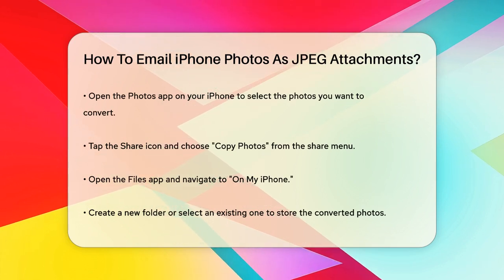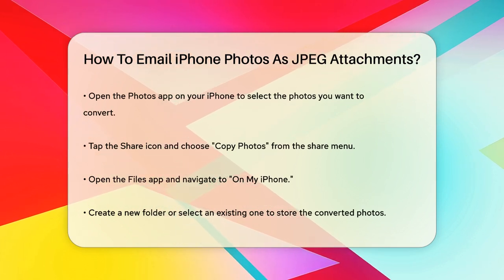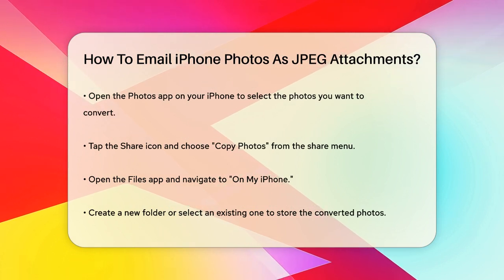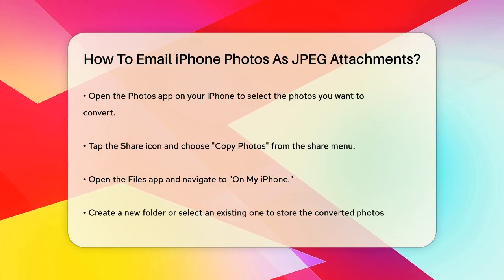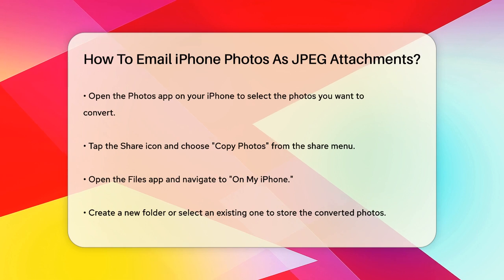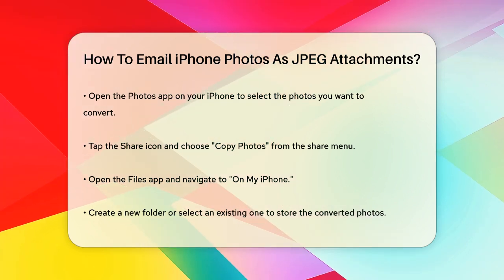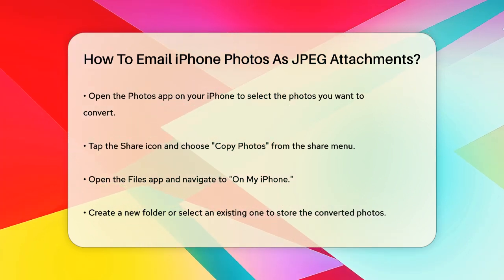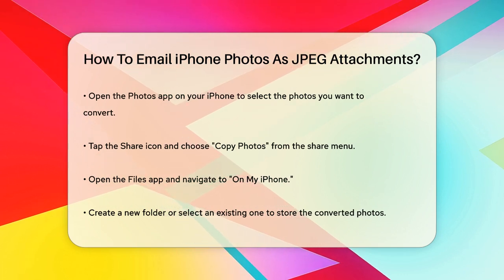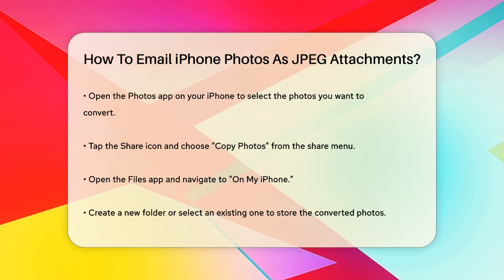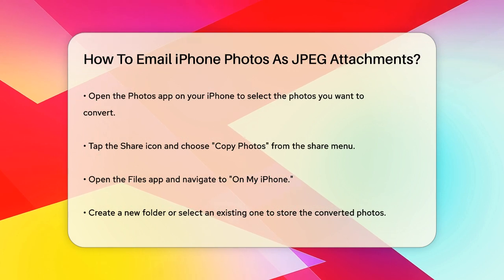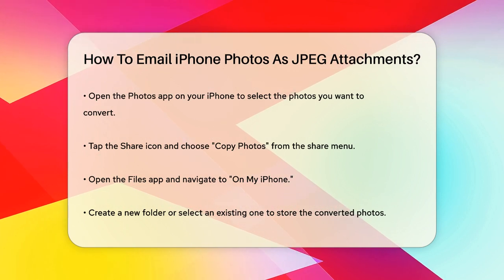Here's a simple way to do it directly on your iPhone. Open the Photos app, select the pictures you want to convert, and tap the Share icon. Choose Copy Photos from the Share menu. Next, open the Files app, go to On My iPhone, and create a new folder or use an existing one. Tap and hold a blank space in the folder, and select Paste. This will automatically convert your photos to JPEG format.